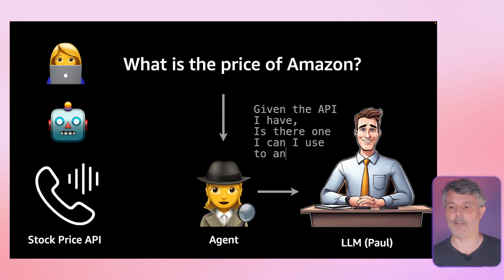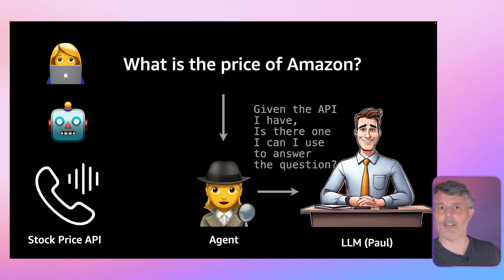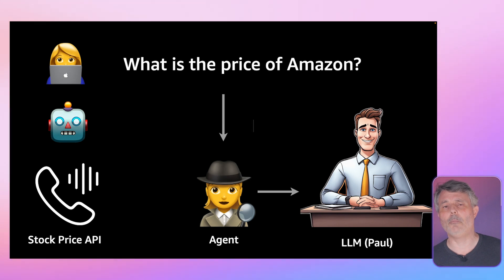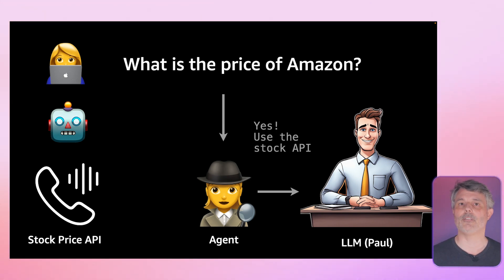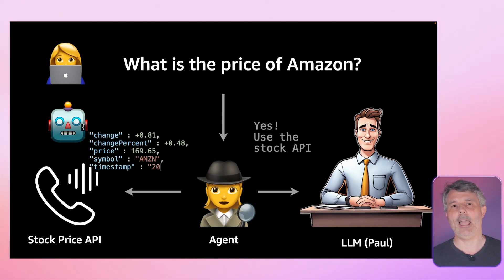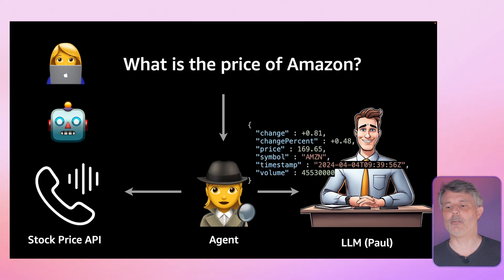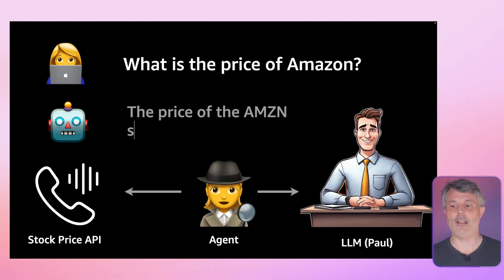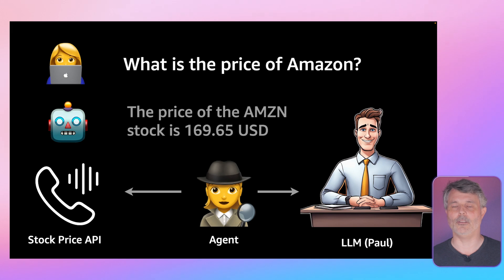So I ask: what is the price of Amazon? The agent is first going to interact with the model to say, given the APIs I have at my disposal — the set of tools that I have — is there one I can use to answer the question I received? And Paul will look at all the tools and all the questions I submitted, and he will most probably answer something like: yes, you can use the stock API. Based on that information, the agent will call the stock price API, give whatever parameter as input, wait for the answer, and give the answer together with the original question to the large language model. And Paul, my large language model, will do what he does best to formulate a response, saying the value of AMZN today is $169-something US dollars.